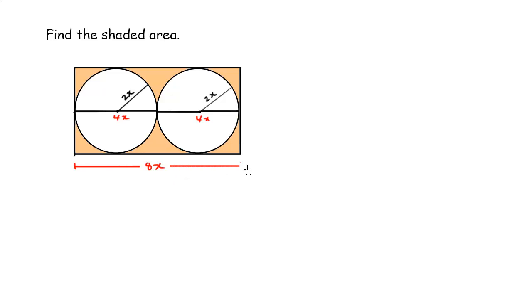Similarly, we have this radius going up and down as 2x, and then if we add another 2x we got a total of 4x. So this height here is going to be 4x.